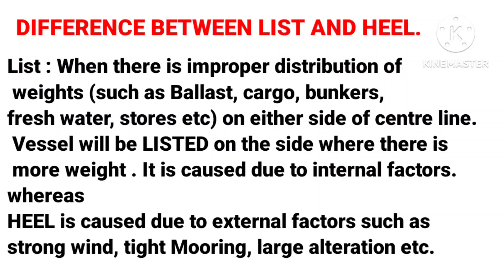Difference between list and heel: List occurs when there is improper distribution of weights such as ballast, cargo, bunkers, fresh water, stores, etc. on either side of the center line. The vessel lists on the side where there is more weight. It is caused due to internal factors.